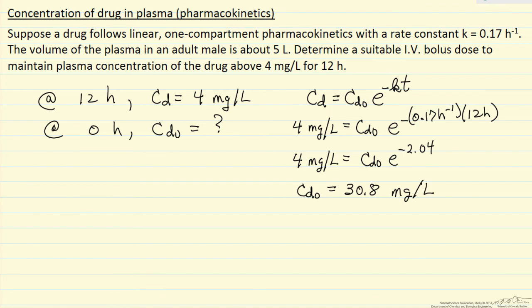The problem asks us how much we have to inject, how many mg. And we have the volume is 5 liters. So the mass that we inject initially is volume times the initial concentration. So 5 liters multiplied by 30.8 mg per liter.